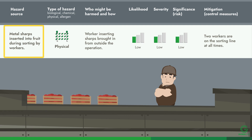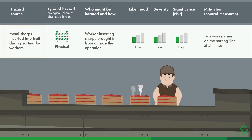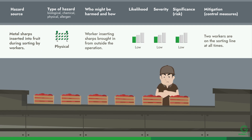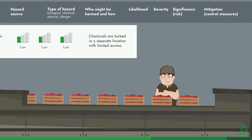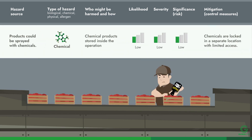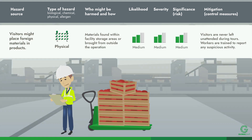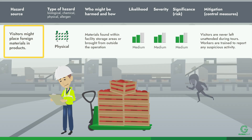A dissatisfied worker may try to insert metal sharps into the product line or spill a hazardous chemical on the product. Visitors might try to place foreign material in the product to purposely cause harm.